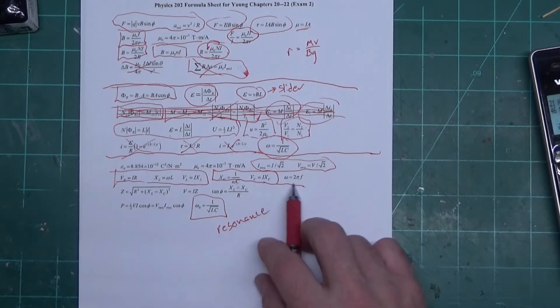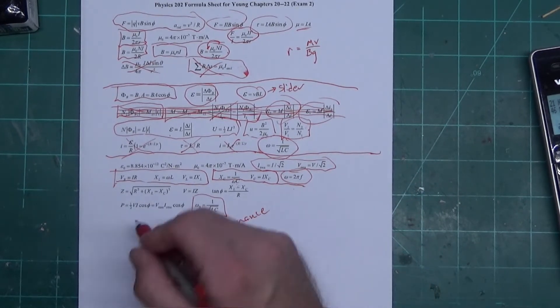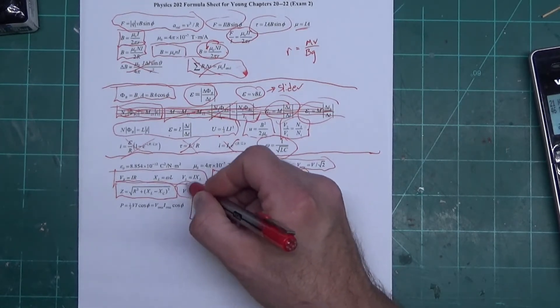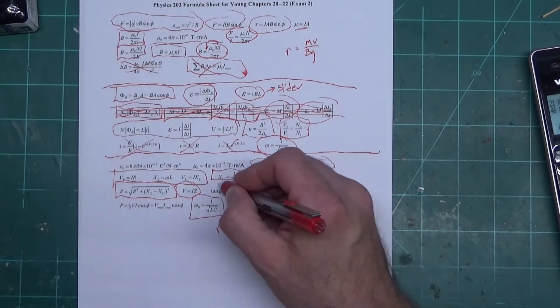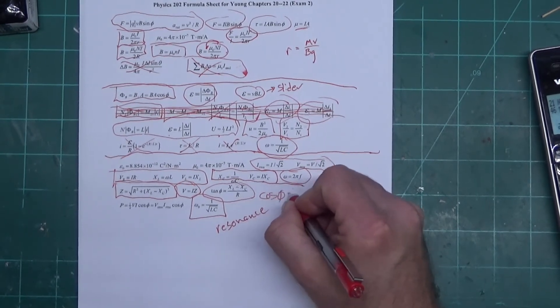This is the conversion between angular frequency and linear frequency. Here is impedance - the equation for the impedance V equals I Z. This I don't really use.